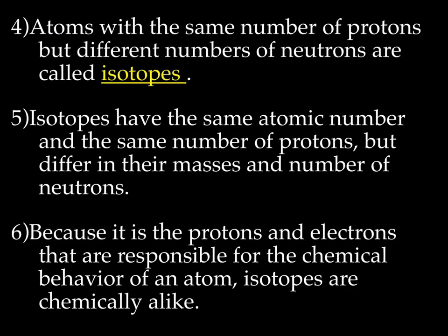So atoms with the same number of protons, but different numbers of neutrons are called isotopes. So isotopes have the same atomic number and the same number of protons, but differ in their masses because they have a different number of neutrons. So we can have a carbon. Again, carbon has 6 protons. Every carbon in the world has 6 protons. But some carbons might have 6 neutrons, some might have 5, some might have 7. So because it's the protons and the electrons that are responsible for the chemical behavior of an atom, isotopes are chemically alike. So even though one carbon has 7 neutrons and one has 5 neutrons, they still act the same.